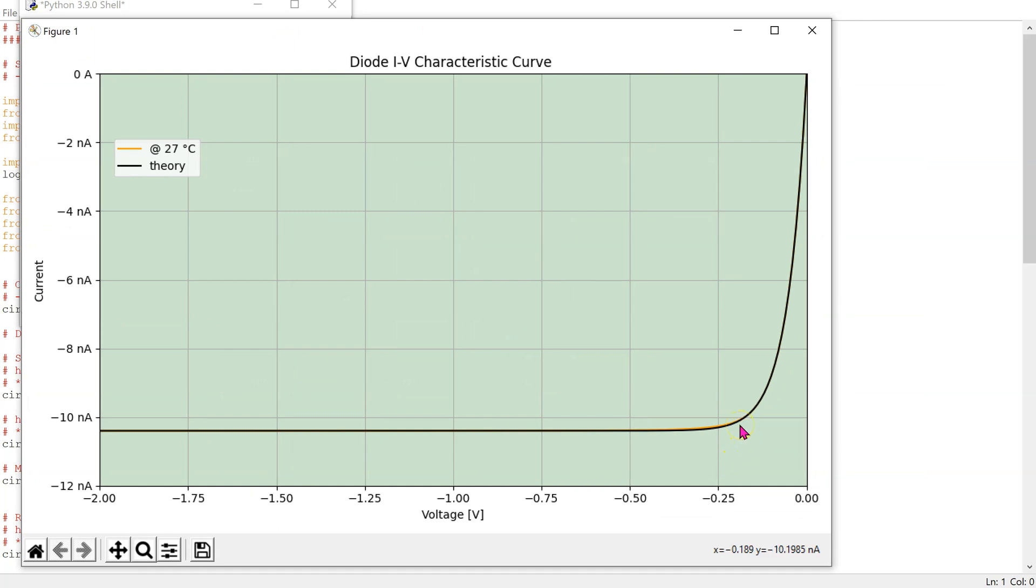We can see that in this case, the reverse saturation current is around 10.4 nanoamps, which agrees very well with the earlier value from LTSpice, since we are using the exact same model.